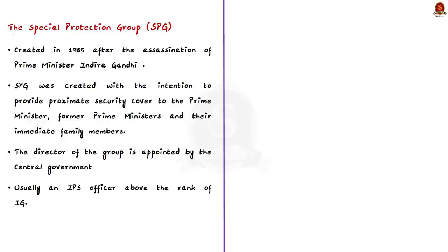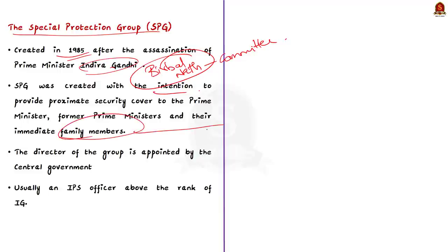See the SPG is nothing but special protection group created in 1985. See the former prime minister of India Mrs. Indira Gandhi was assassinated by two of her personal security guards in October 1984. This made the government to appoint the committee under Birbal Nath. The committee submitted its recommendation to create a special protection unit to provide security to prime minister. So the SPG was created with an intention to provide proximate security cover to the prime minister, former PMs and their immediate family members. The immediate family members includes their wife or husband, parent and their children.